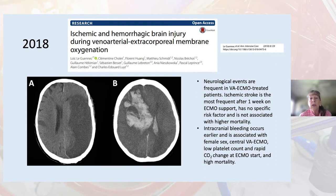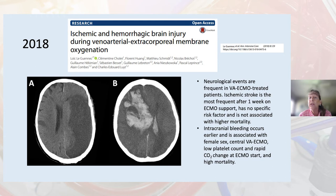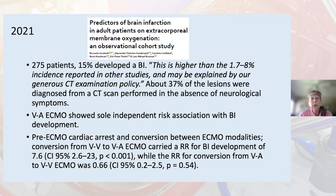Moving to 2018, neurological events are frequent in VA ECMO treated patients. Ischemic stroke is the most frequent, occurring after about one week on ECMO support in this paper, with no specific risk factor and not associated with higher mortality. Intracranial bleeding occurred earlier and is associated with female sex, central VA ECMO, low platelet count, and rapid CO2 change at ECMO start, and is associated with high mortality. The common theme across most of these papers is changes in CO2.